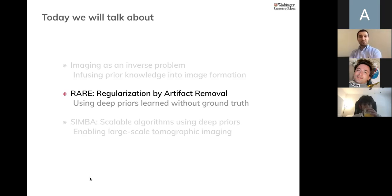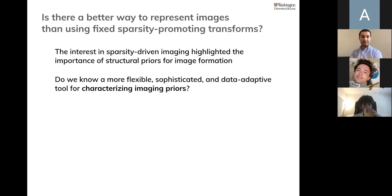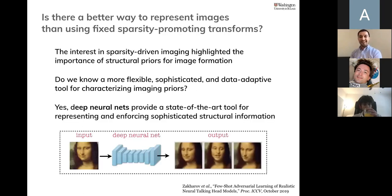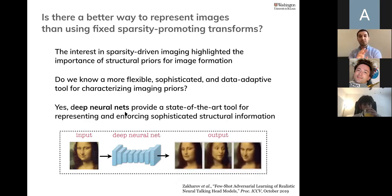Let's move on to the next part, which is the framework I've been working on: regularization by artifact removal, inspired by another framework called regularization by denoising. The question is: sparsity-promoting transforms have been very efficient — can we do more to represent visual images? Yes. There's been a lot of recent interest in using deep learning to represent visual data. Neural nets can be very efficient tools to work with visual images, depth fields, and similar data. For example, Samsung's team used neural nets to synthesize different views from a single image.